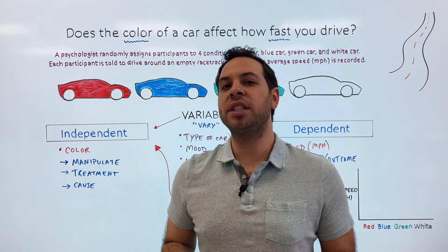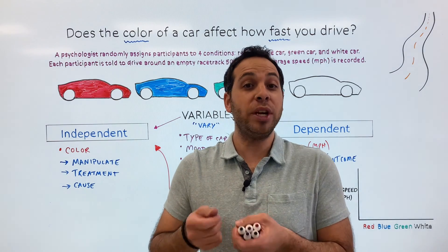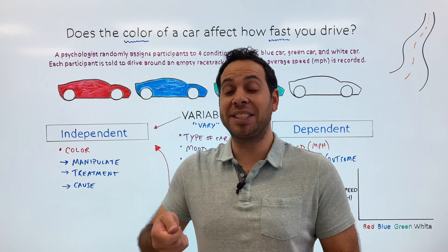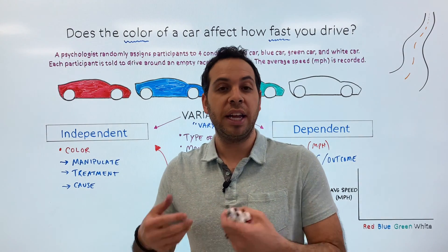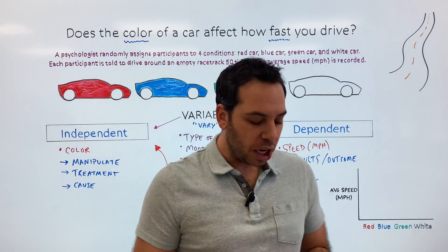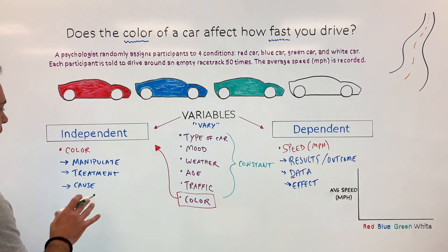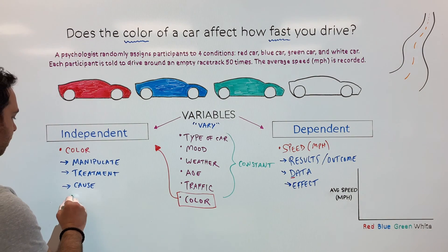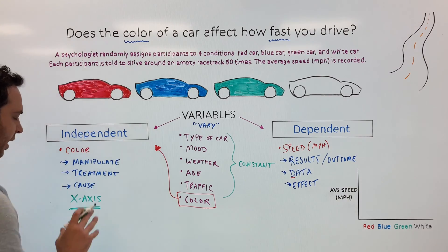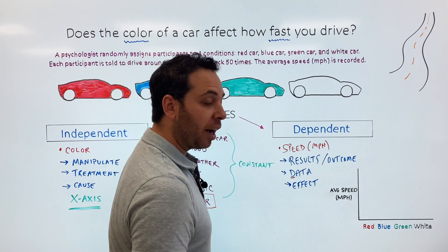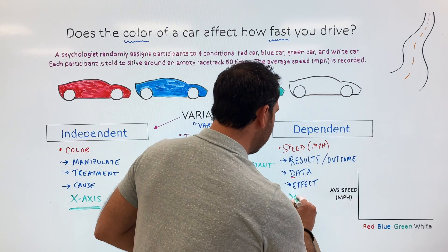Alright, so what if you actually wanted to see the results of the study? How do we know if the independent variable had some impact on the dependent variable? In this case, does the color of a car impact how fast somebody drives? Well, here's kind of a general rule of thumb. The independent variable will always be on our x-axis. We'll graph this out. So we have our independent is our x. And our dependent would be on our y-axis.